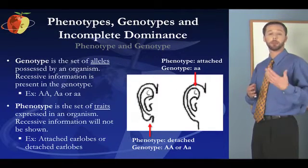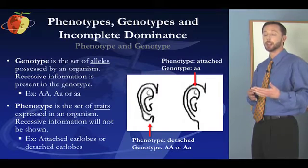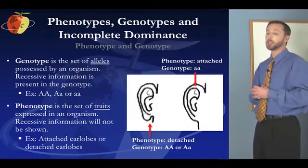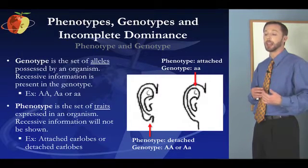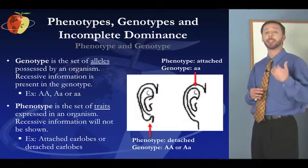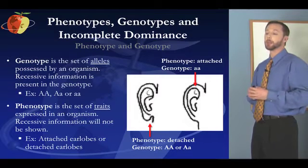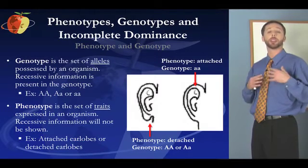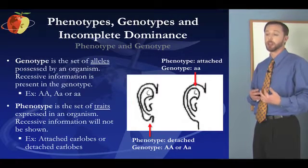The genotype is AA homozygous dominant, or AA heterozygous where the capital A is still dominant, or lowercase a lowercase a as we see at the top of the diagram, which is homozygous recessive. In both of the dominant cases — capital A capital A, or capital A lowercase a — the dominant trait of detached earlobes wins out and the phenotype shown is detached earlobes. But in the case where there are two recessive alleles, so the genotype is homozygous recessive, we see the expression of the recessive trait, which is attached earlobes. So the phenotype is attached.